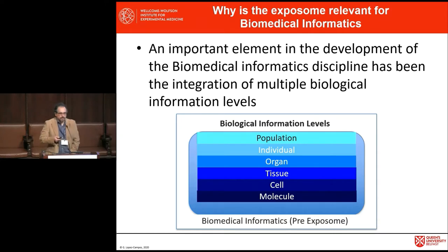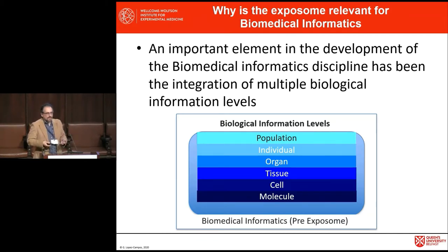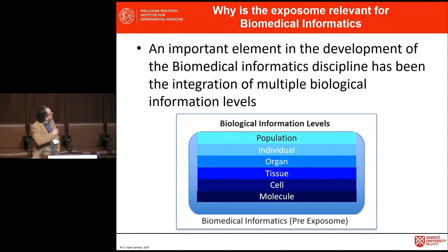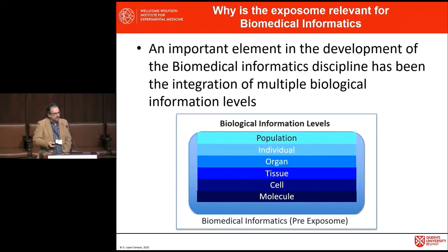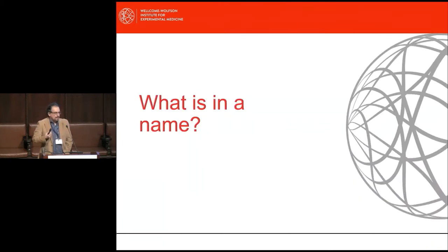Something that was sort of a paradigm for biomedical informatics was the way we structure information. For a long time, we were just thinking about information coming from different levels. We had lower levels at the molecular level, and the omics revolution has made a lot of work in this area. Then we went all the way up through cells, tissues, organs, individuals, and population. We have experience dealing with all these levels of information and have developed lots of applications and solutions. This was the perspective before we started considering the exposome.